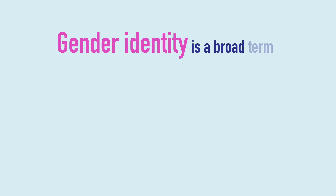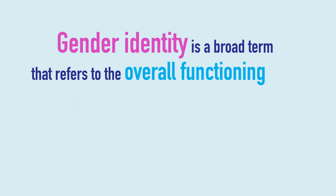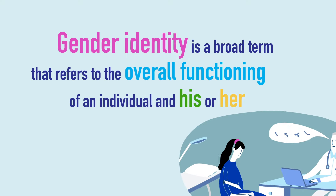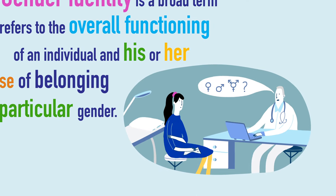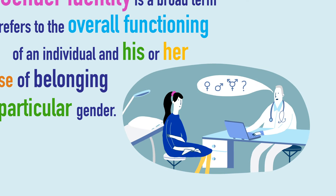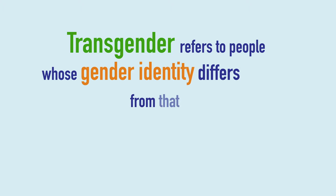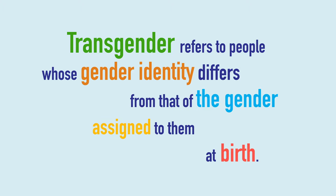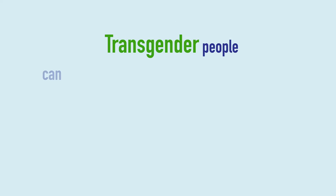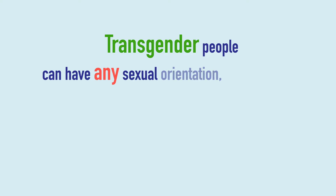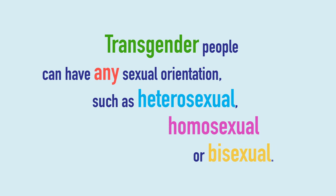Gender identity is a broad term that refers to the overall functioning of an individual and his or her sense of belonging to a particular gender. Transgender refers to people whose gender identity differs from that of the gender assigned to them at birth. Transgender people can have any sexual orientation, such as heterosexual, homosexual, or bisexual.